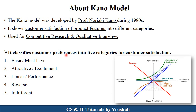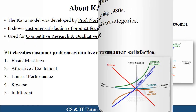Basically, the Kano model is divided into a total of five categories for customer satisfaction. The first one is basic and must-have functionality; the second is attractive and excitement functionality; the third is linear performance; then reverse; and then indifferent. This is the structure of the Kano model.